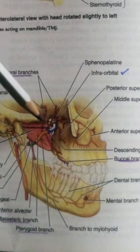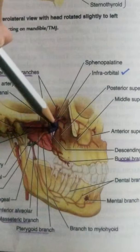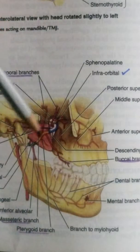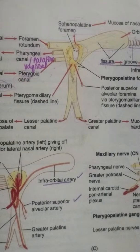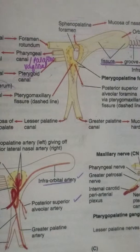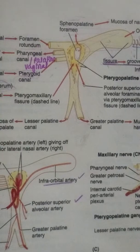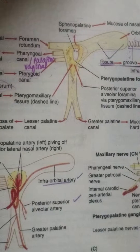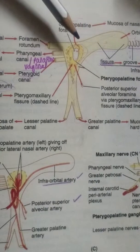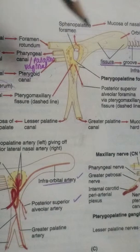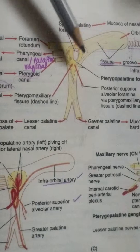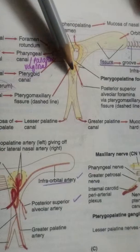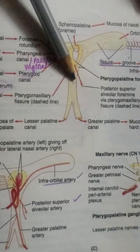Now the third part — the pterygopalatine part — enters the fossa and gives different branches here. Before doing the different branches of the third part in the pterygopalatine fossa, we need to know the communications of the pterygopalatine fossa. These communications are given in a separate video on the boundaries and communications of the pterygopalatine fossa, but here I am giving an overview.